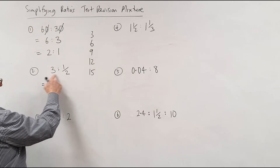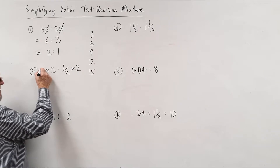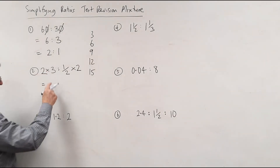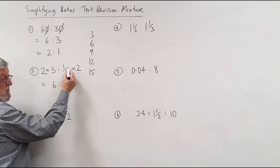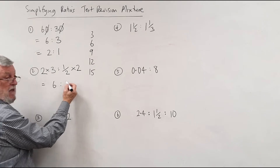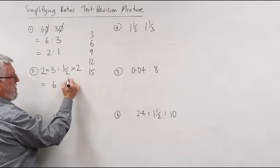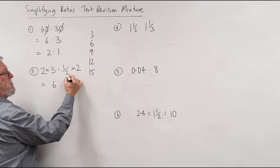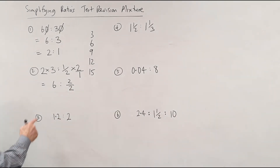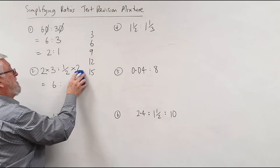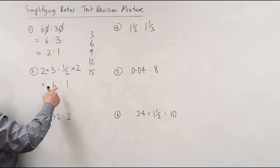Now what do I do if I've got halves? If I double this side and double that side, the halves will disappear. Two threes are six, and two lots of a half — some people multiply the tops and multiply the bottoms: one times two is two on top, two times one is two on the bottom, so that's two over two, which is one. Either way, two lots of a half is one, and now we're at the smallest whole numbers.